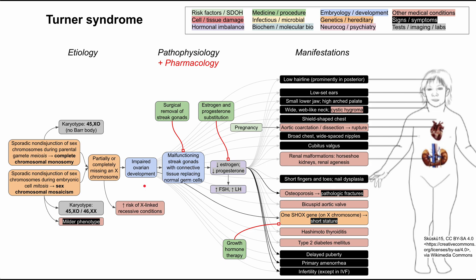This is a mechanism of disease map for Turner Syndrome. I'll be talking about the etiology, the pathophysiology, the manifestations of Turner Syndrome, and then lastly a few notes on the pharmacology and the interventions you could do to treat this syndrome. Each of these boxes are color-coded according to the core concepts you see at the top right here, and I'll be clearing all of the boxes and going through them one by one as I discuss them.